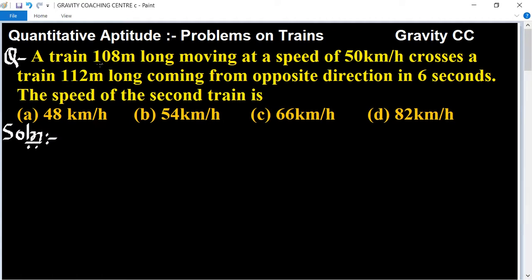So in these questions, first train length is 108, second train length is 112 meters. First train speed is given. Second train speed we need to find. Both are passing each other in 6 seconds. So we use the formula. Let the speed of the second train be S2.